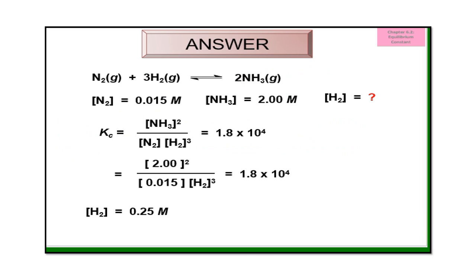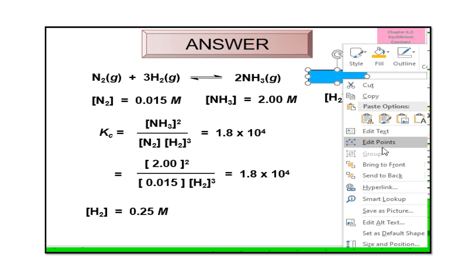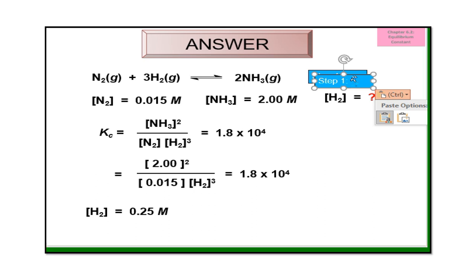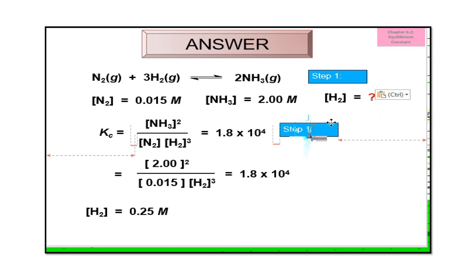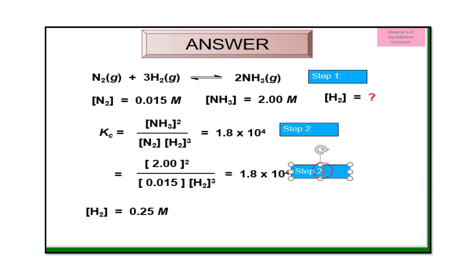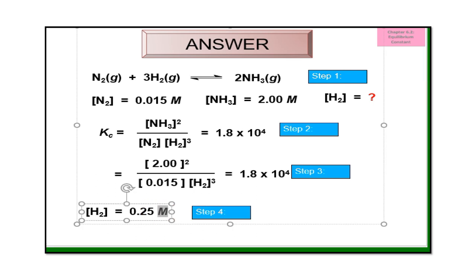I suggest you write down steps. Step one: make sure the equation is balanced. Step two: write down the Kc expression. Step three: substitution based on the information given. Step four: answer the question. In this case, question one asks for the concentration of hydrogen gas. Make sure your final answer includes the unit — concentration is in molar.